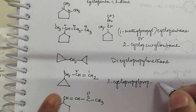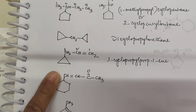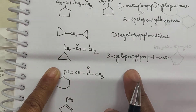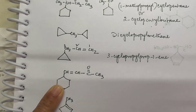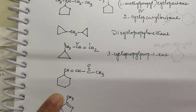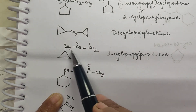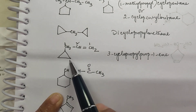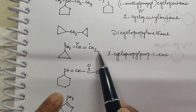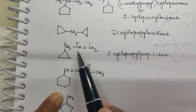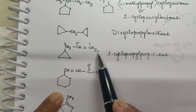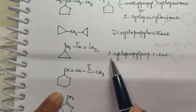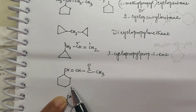You can call this as 3-cyclopropylprop-1-ene. Now you may ask: this ring also contains 3 carbon atoms and the chain also contains 3 carbon atoms — why call it a derivative of propene? That is because there is a functional group — a double bond — so the ring becomes a substituent only, and the chain with the double bond is named as the main chain. That is why it is 3-cyclopropylprop-1-ene.